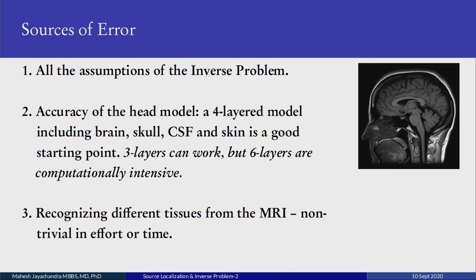What are the sources of error? All the assumptions of the inverse problem, if they are off or not taken into account, will produce a huge error. The head model has to be accurate. Neuroscientists usually use a four-layered model: the brain, the skull, the cerebrospinal fluid, and the skin. This is a good starting point. Three layers can also work but are not ideal, while six layers is good but computationally very intensive — the computer will keep modeling it for days.